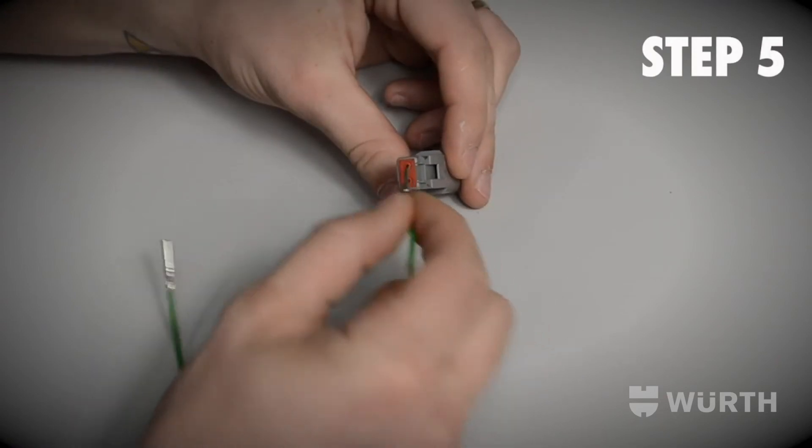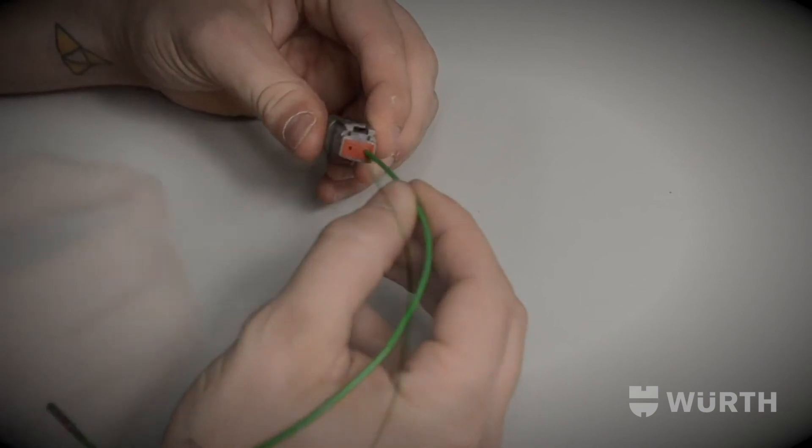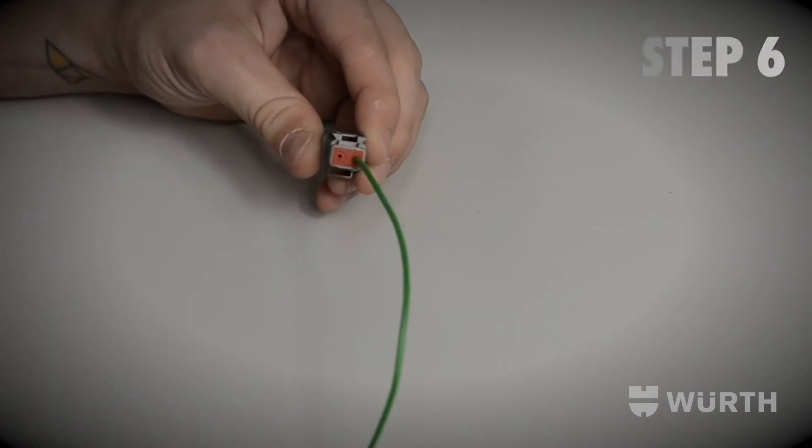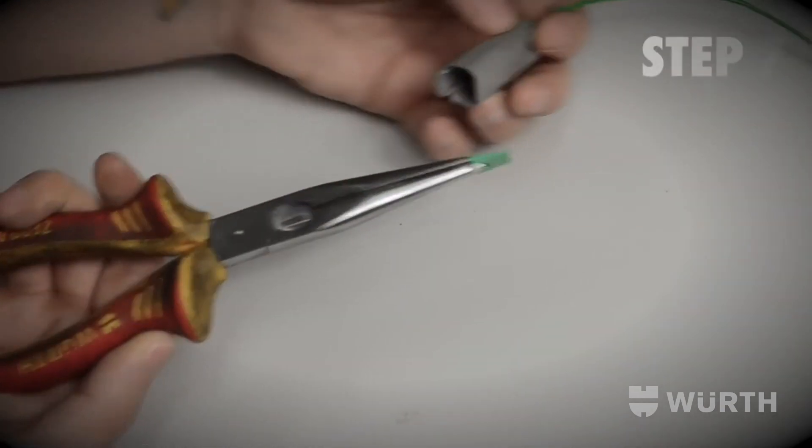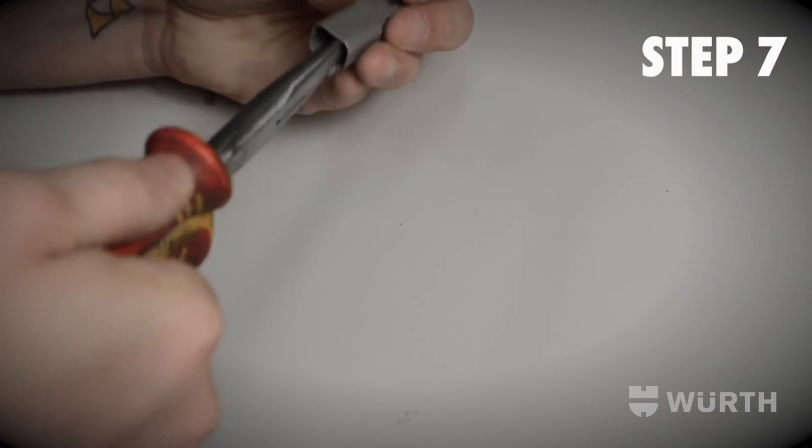Once crimped, insert the male pins into the socket from behind until you hear a click. Ensure the rubber insulation is firmly in place. Using some pointy nose pliers, insert the wedge into the socket.